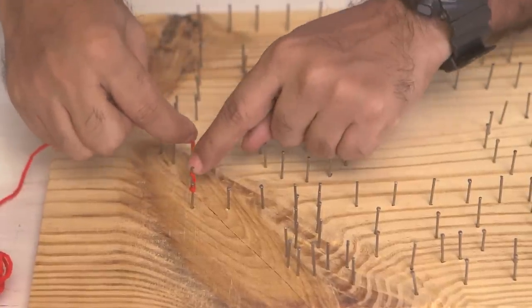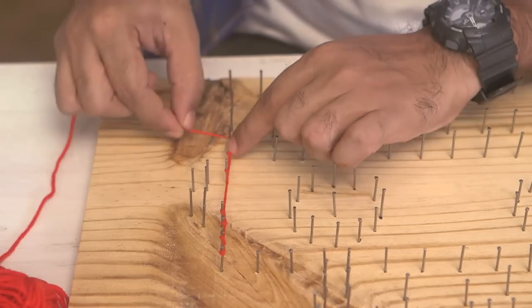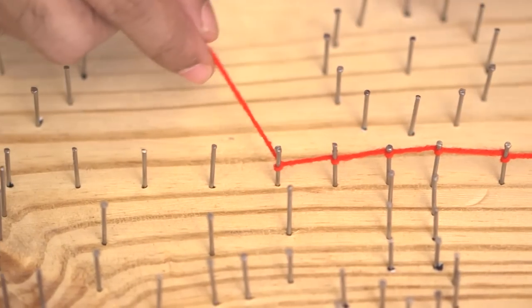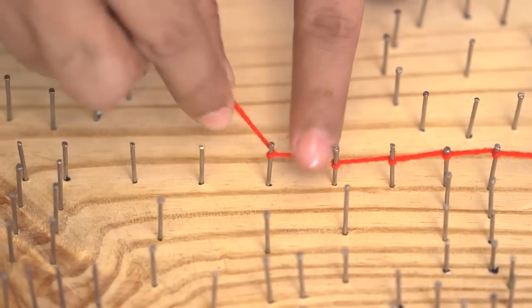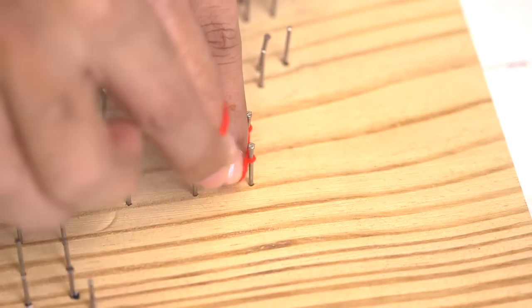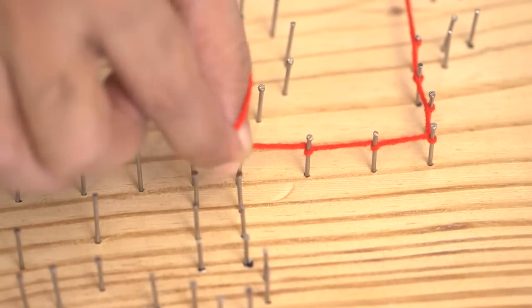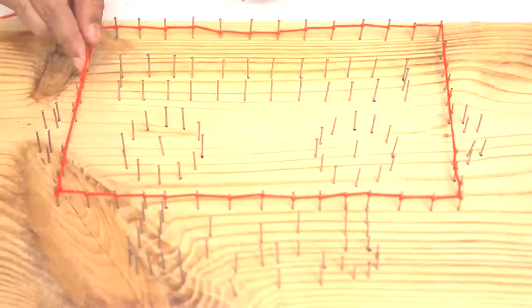And every time you go around the nail just turn it once and then move to the next one. So first we'll form an outline. And you can see I'm just twisting the wool around the nail. And pulling it so that it's nice and tight. And forming an outline to my design. This way it gets slightly easier because you know what your form is like.